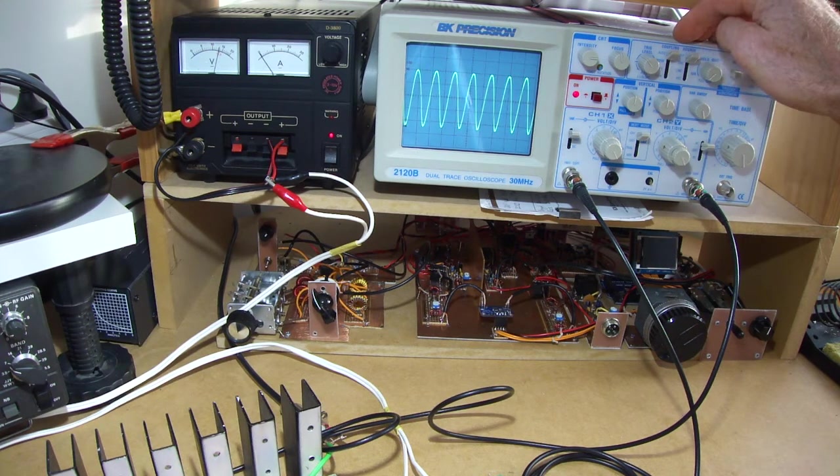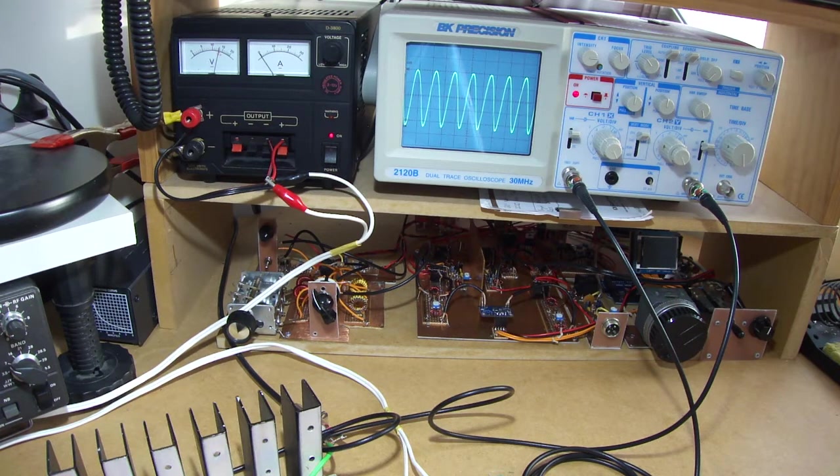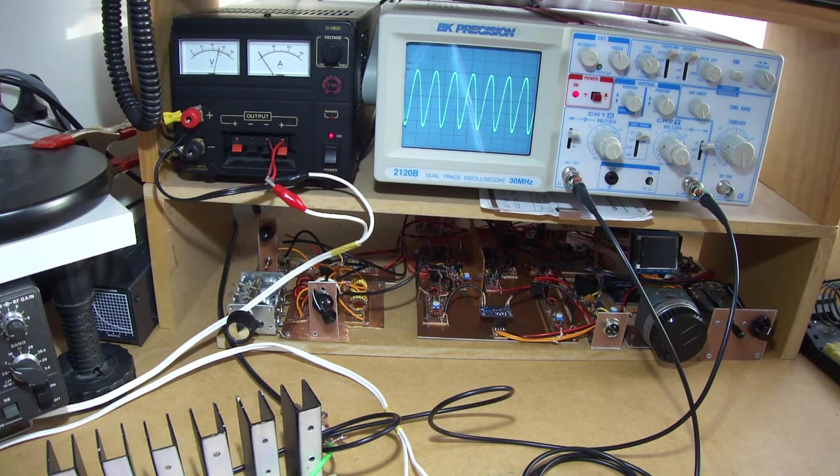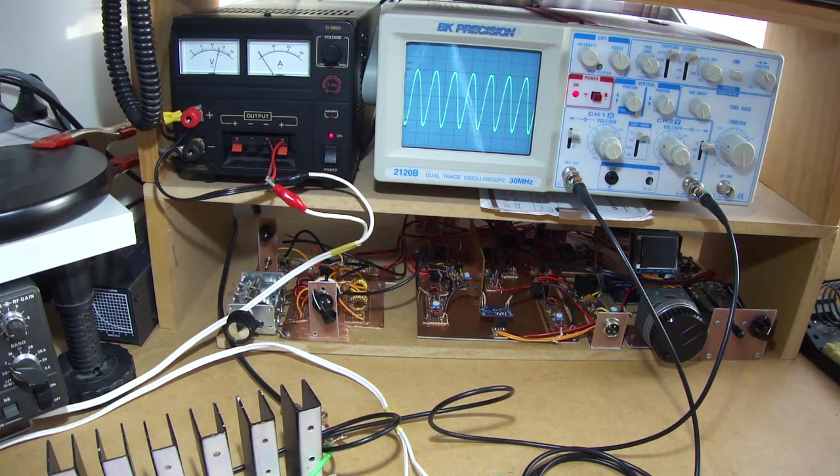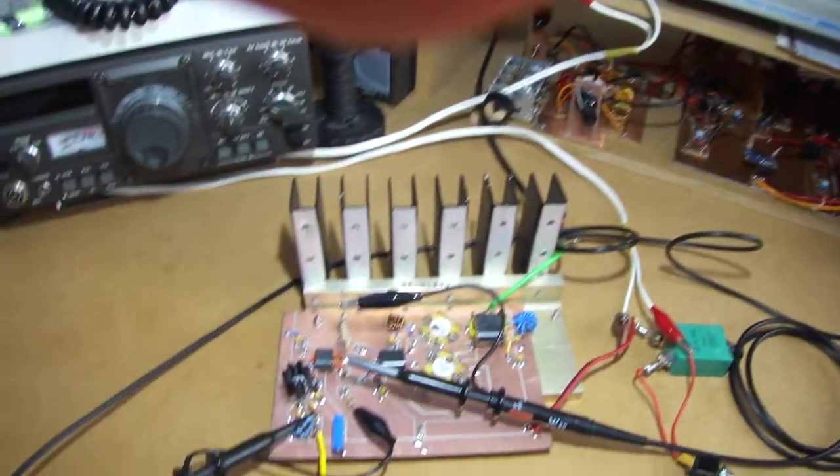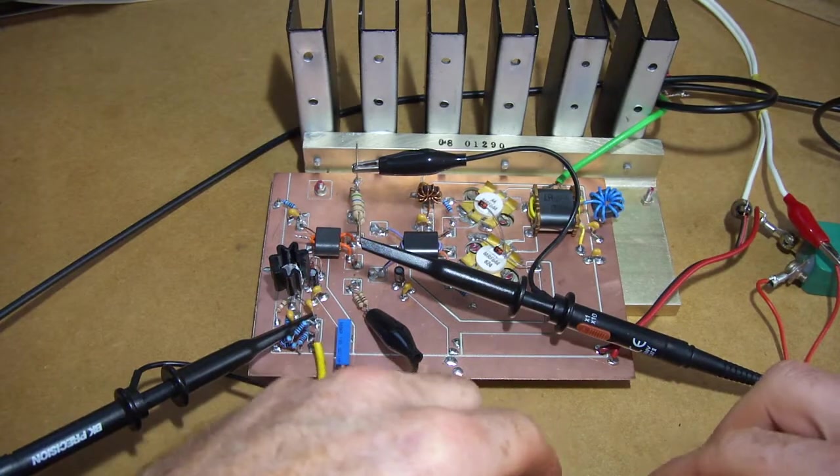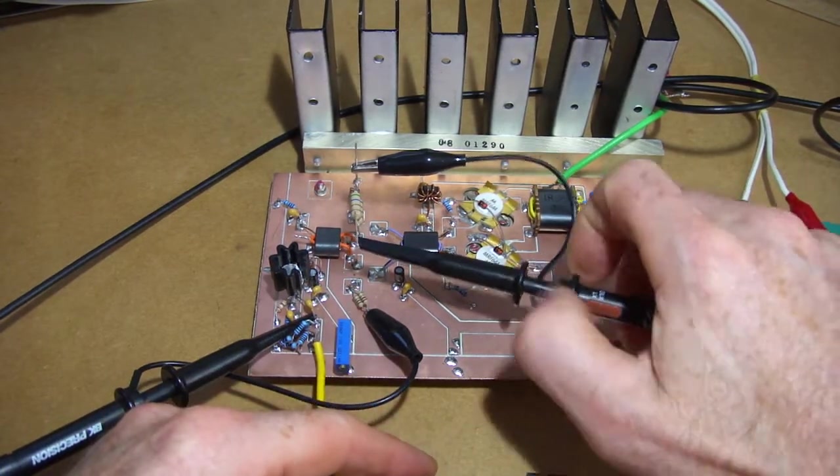So 20 log 2.5 over 0.18 volts, gives us around 23 dB. So, I'm quite happy with that at this stage of the game, and we will use that to feed into the two BD139 push-pulls, and we'll see how that works.